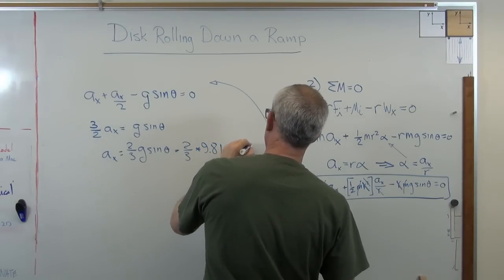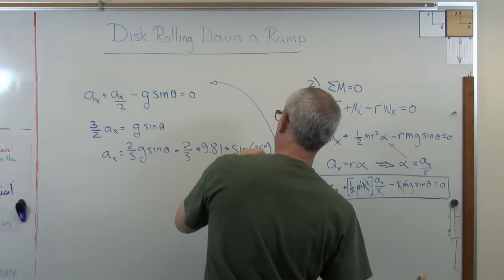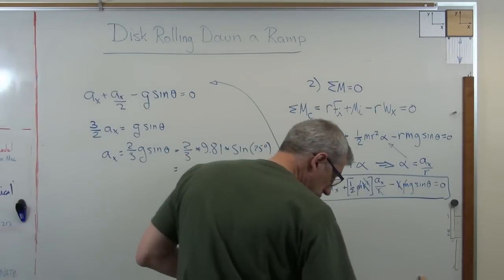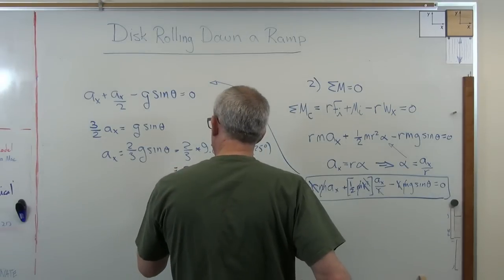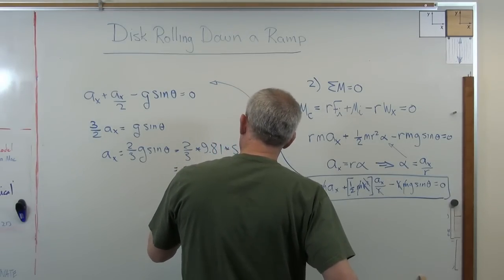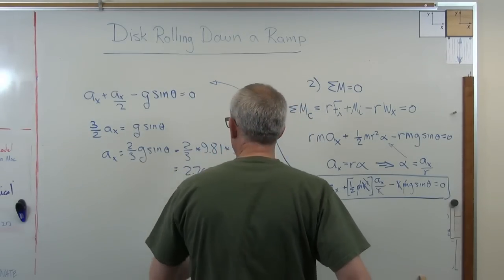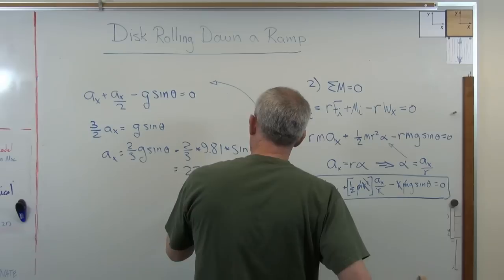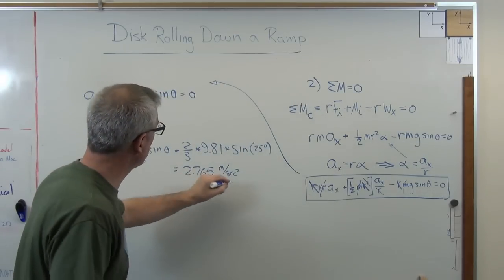So you're going to get two thirds times 9.8 times sine of 25 degrees. Work that out. Not too hard to do. And you're going to get 2.764 meters per second squared. And so there's the acceleration.